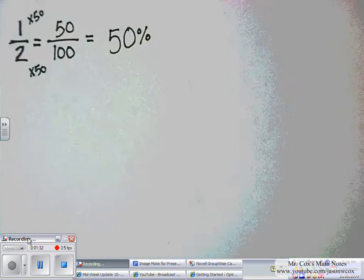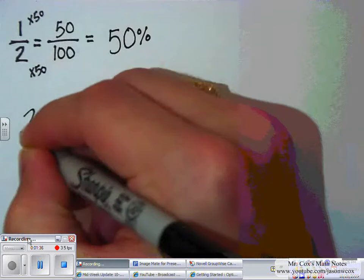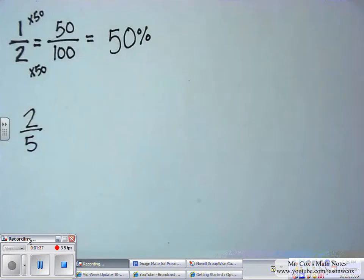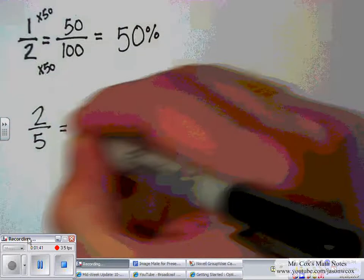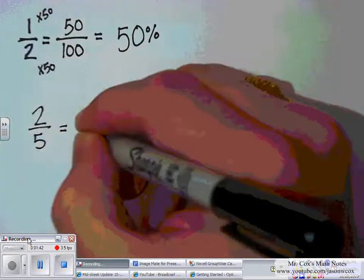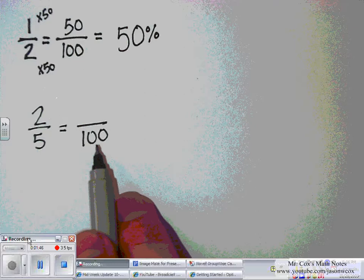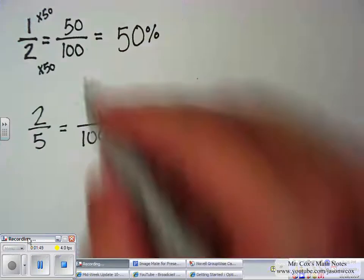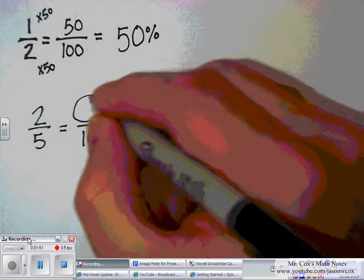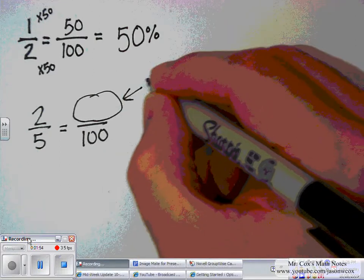Let's try another one — let's try 2 fifths. Again, I want to make that equal to something over 100. So I'm going to make an equivalent fraction, and my denominator is going to be 100. All I need to do is find this numerator, and that will give me my percent.